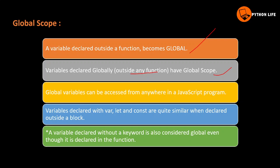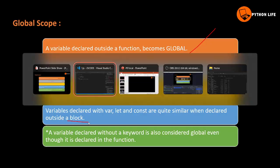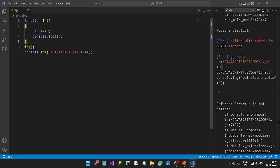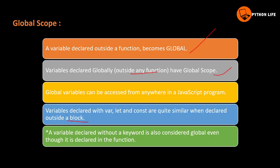Global variables can be accessed from anywhere in a JavaScript program. Variables declared with `var`, `let`, and `const` are quite similar when declared outside of the block — they are all global. A variable declared without a keyword is also considered global, even if it is declared inside the function.